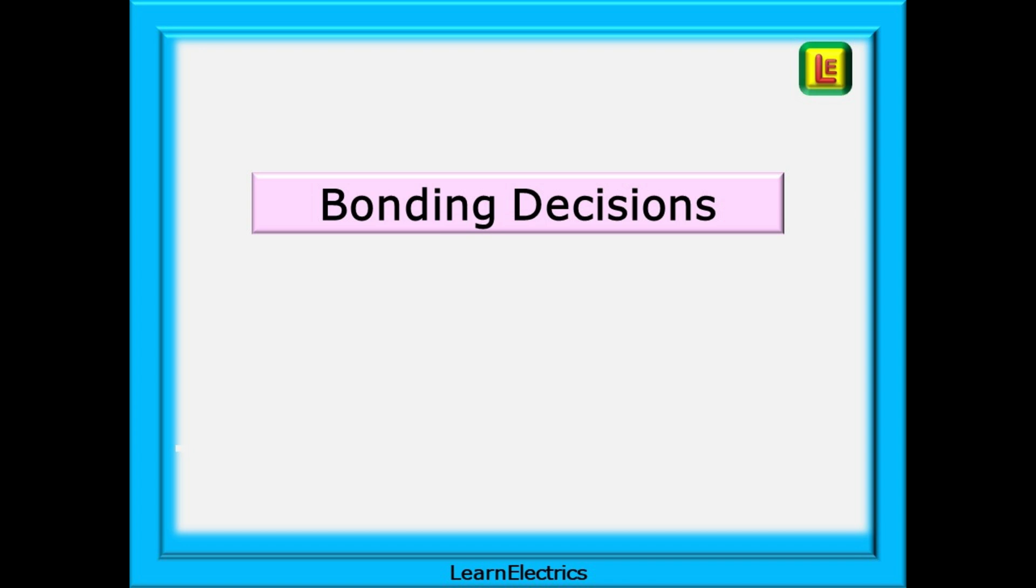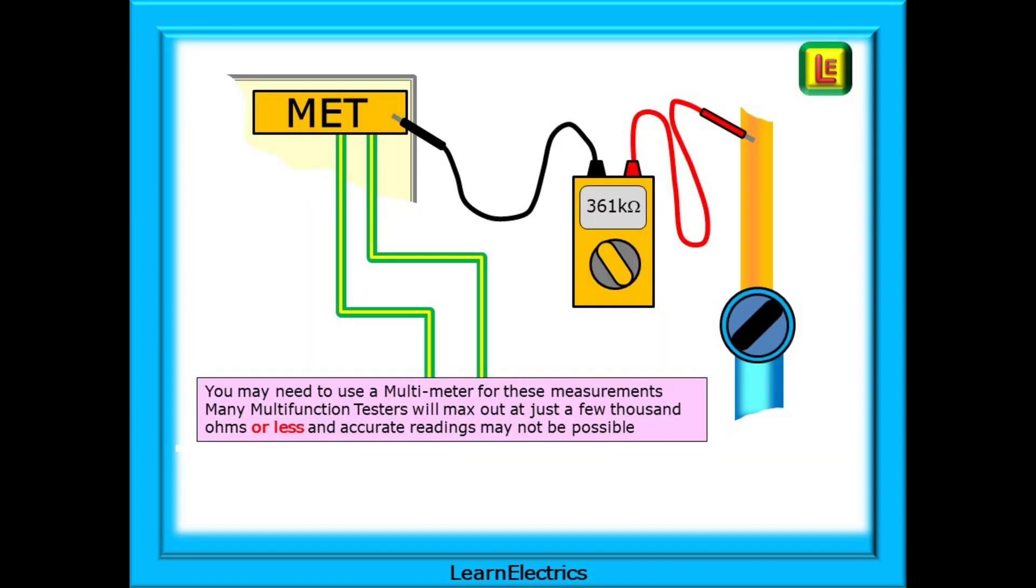So how do we make decisions about bonding or not? We should measure the resistance between the main earth terminal and the conductive part being tested with a multimeter that has sufficient ranges that it can display the resistance values accurately. Many multifunction testers will reach their maximum display value at just a few thousand ohms or even less, and accurate readings may not be possible. A reading such as OL shows that the reading is over limits for the meter, and that is not going to help us to make a decision.